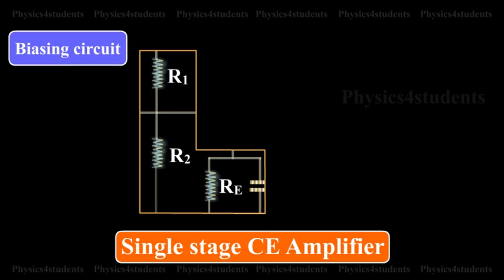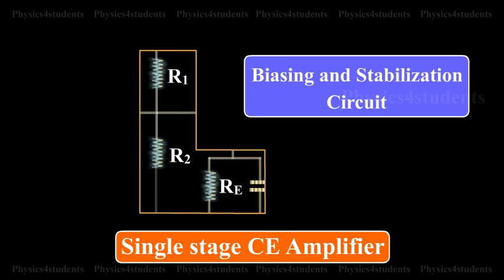Biasing circuit: The resistances R1, R2, and RE form the biasing and stabilization circuit.